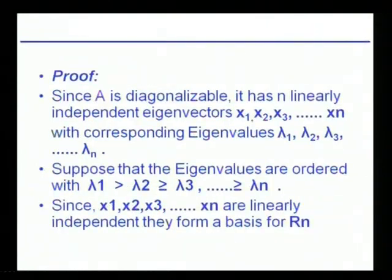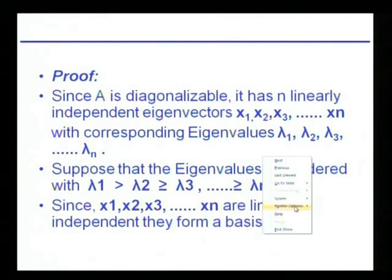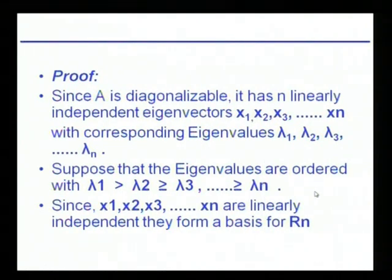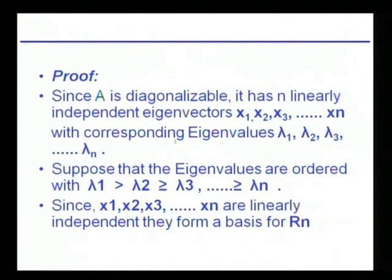Why does this work? Since A is diagonalizable, it has n linearly independent eigenvectors x1, x2, …, xn with corresponding eigenvalues lambda1, lambda2, …, lambdan. These eigenvalues may not all be distinct — some may have algebraic multiplicity r, and if geometric multiplicity equals r, A is still diagonalizable. Suppose the eigenvalues are ordered so that |lambda1| > |lambda2| ≥ |lambda3| ≥ … ≥ |lambdan|, so lambda1 is the dominant eigenvalue.